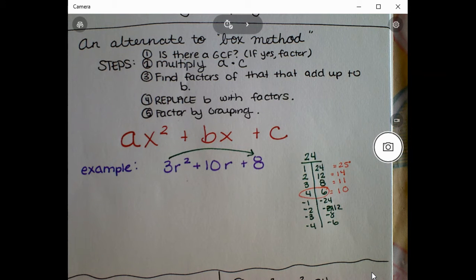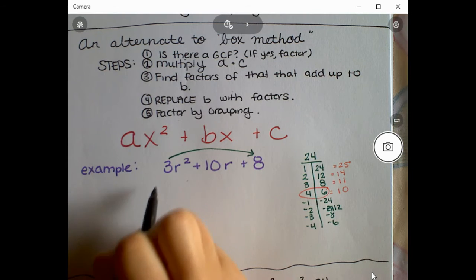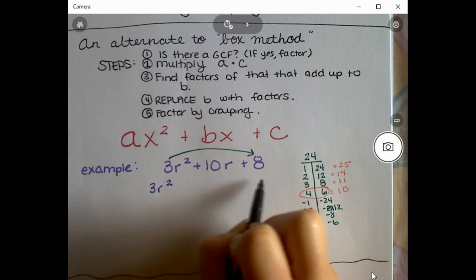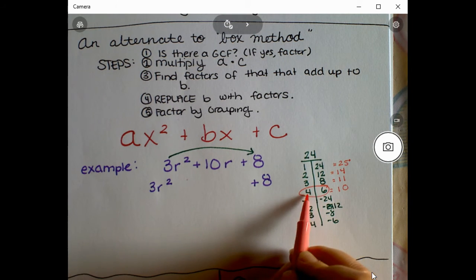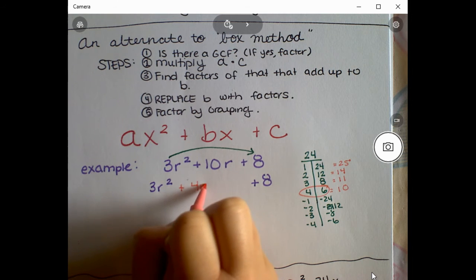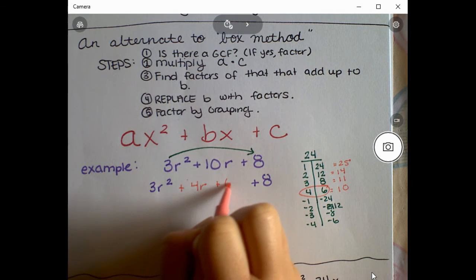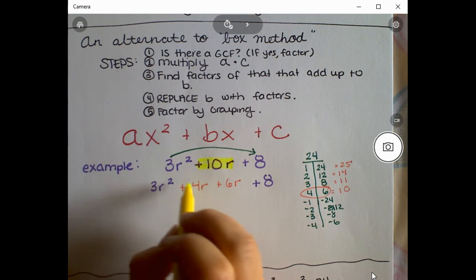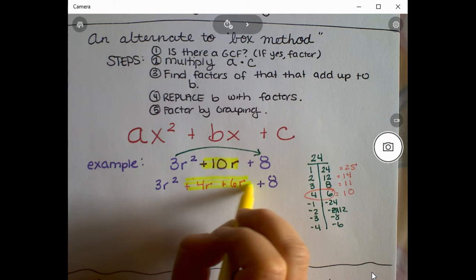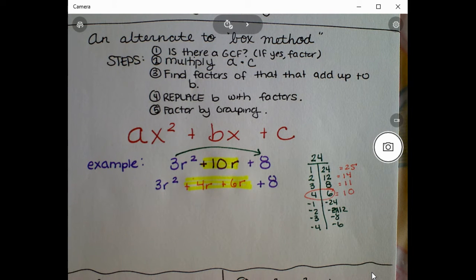Here's where it gets a little different. We keep the first term 3r² and the last term +8, but we replace the middle term with these two numbers: +4r +6r. You can see these are equivalent — 10r is the same as 4r + 6r — so we didn't change the value of the expression, only the format.